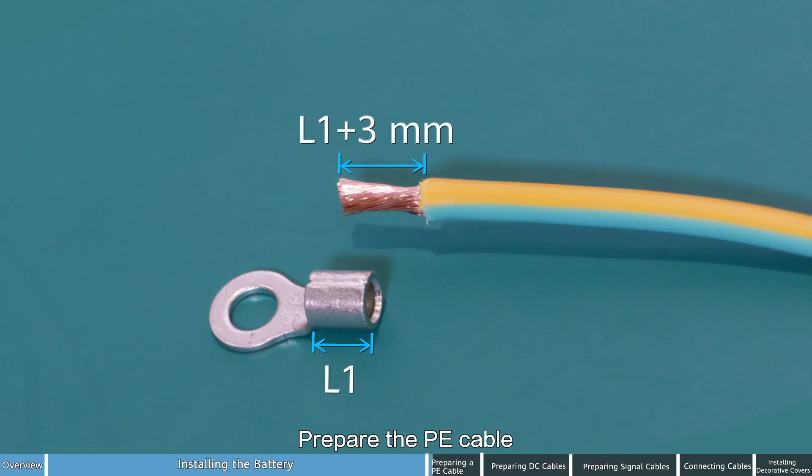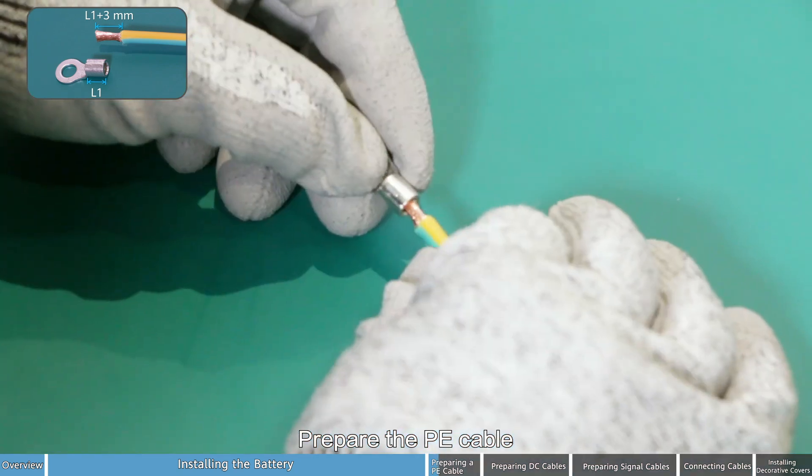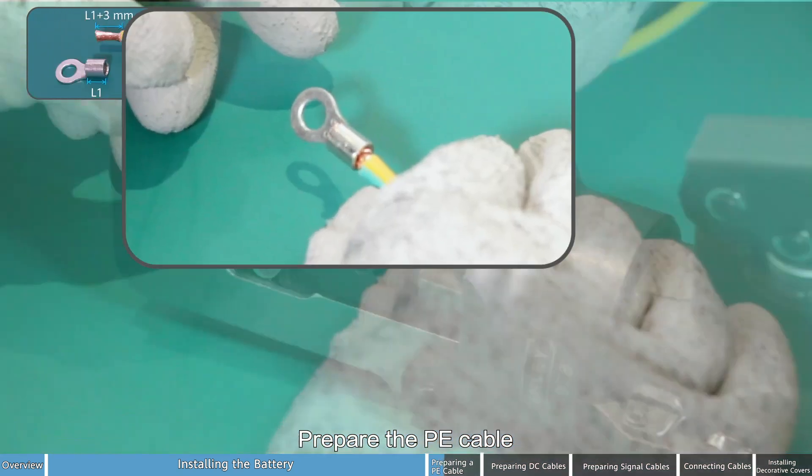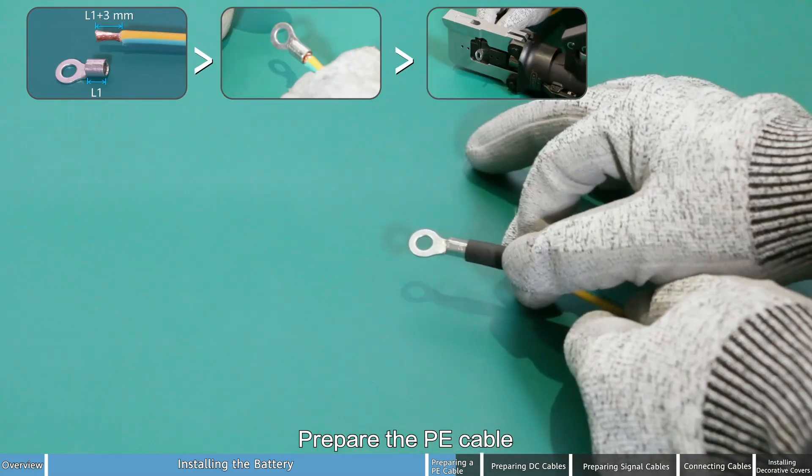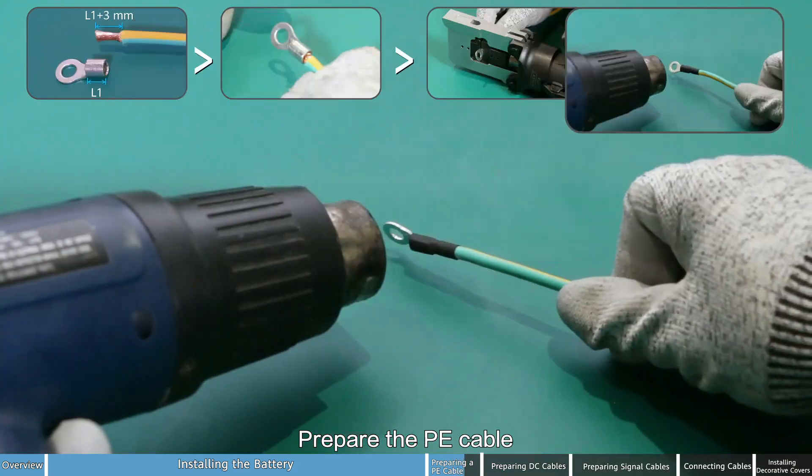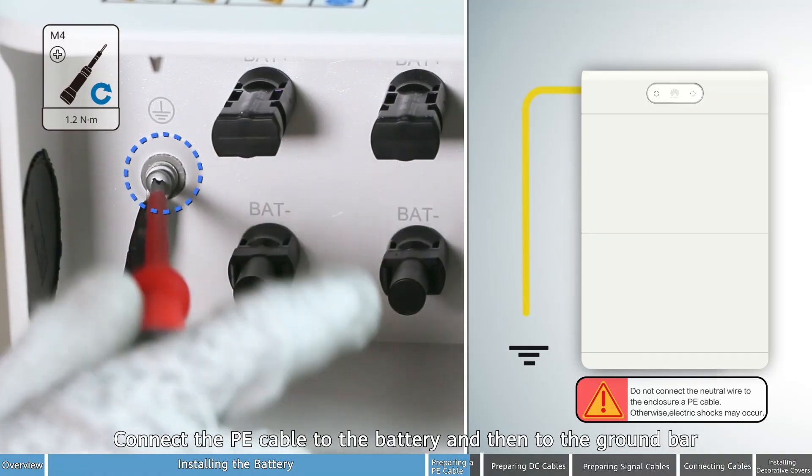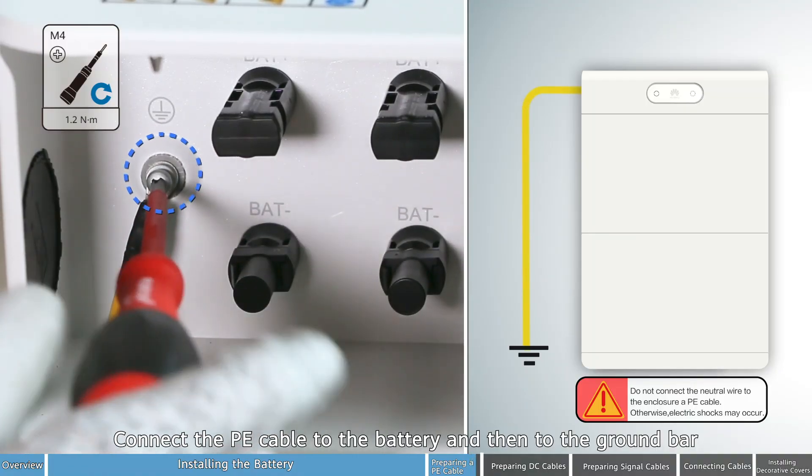Prepare the PE cable. Connect the PE cable to the battery and then to the ground bar.